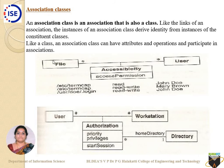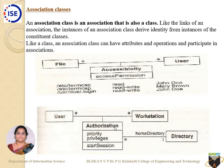In the example: this is my file name, this is my permission — read permission, read-write — and these are users. This is an example of an association class. Similarly, one more example: I have 'User' and 'Workstation' — multiple users, multiple workstations. Users have authorization towards the workstation, wherein I have authorization with priorities, privileges, and a start session. These authorizations have a major impact on this directory. A directory has an authorization, connected with only one home directory, and a directory has multiple authorizations given by multiple users.